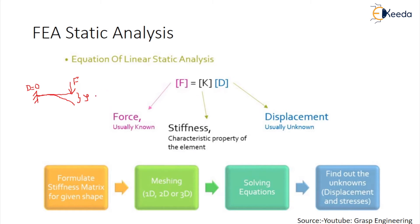To find out the stiffness matrix, we split the beam into two line elements — element one and two — or we can take three, four, or five elements; it depends on you. Then we solve the equation by a direct method or other methods such as variational methods or the Galerkin method. After that, we find the displacement first. Every time we have to find the displacement at the free end first; only then can we get the stress value and then the strain value. That is a linear static analysis.